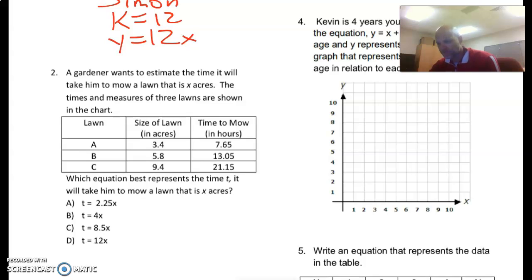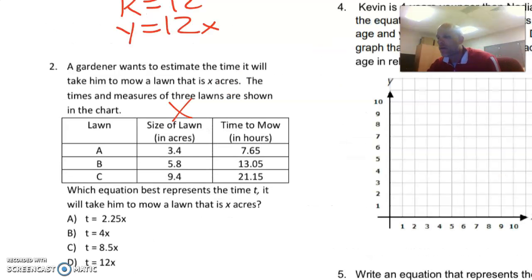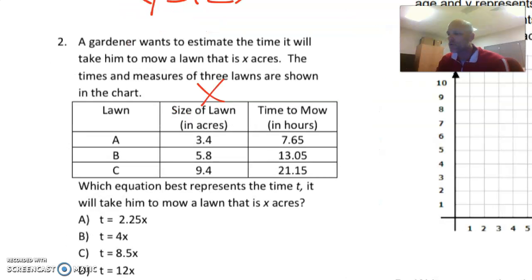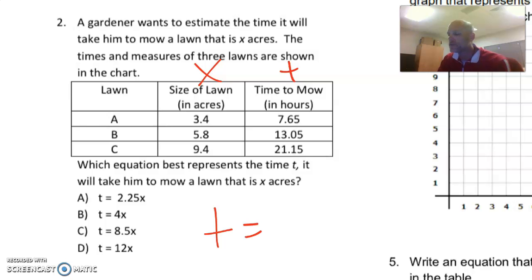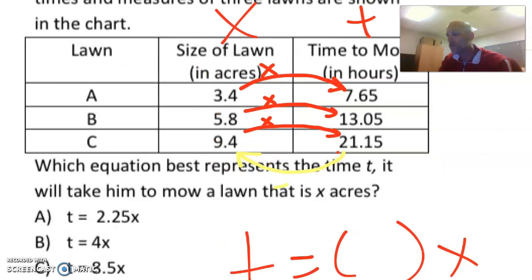a gardener wants to estimate the time it will take him to mow a lawn that is X acres. So we're looking at X acres. The times and measures of three lawns are in the chart. What equation best represents the time or T, it will take him to mow a lawn that is X acres? So obviously we have T equals something times X. So the size of a lawn to that is times something, right? This one, it's times something. Times something. So it has to be all the same thing. So if we did it backwards, we went from there to there. If we went from there to there, it would be divided by something.